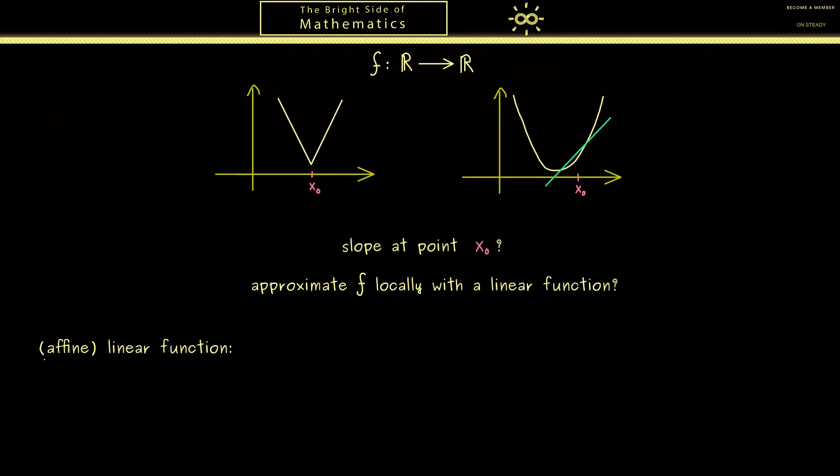To be more precise we would call it an affine function but the term linear function is very common. Maybe also the term linear polynomial would be very fitting. Of course the important part here is that you know what we mean. So we take a function we call g. This one is given by g where we have a linear part and a constant part.